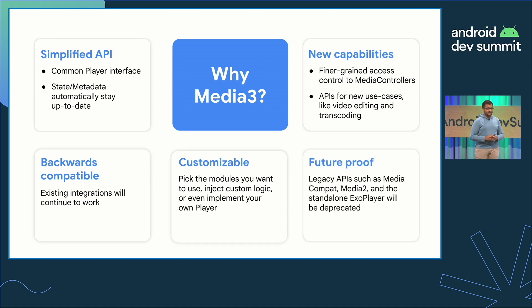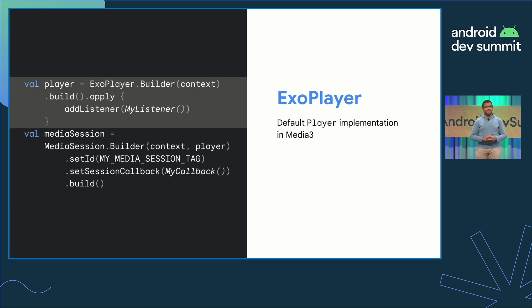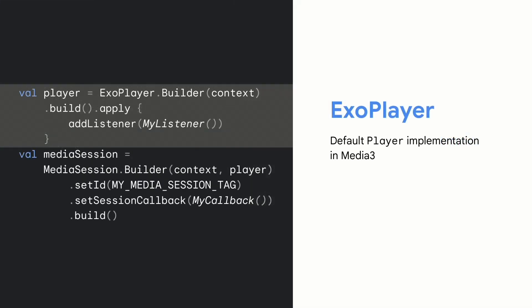Media 3 is the new home for future development of the media APIs and is where our efforts are invested going forward. ExoPlayer is Media 3's default implementation of the Player API. Note that if you already use the standalone ExoPlayer, Media 3 ExoPlayer is identical and just requires a package name change if you're using a recent release. ExoPlayer offers out-of-the-box support for traditional Player functionality, such as playing, pausing, and skipping media items, but it also includes APIs for features like playlists, ad insertion, adaptive streaming, and DRM.